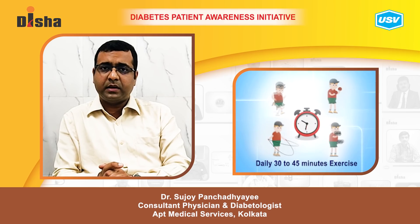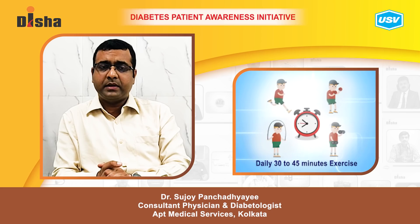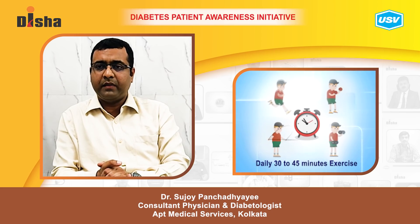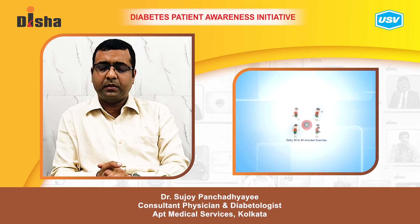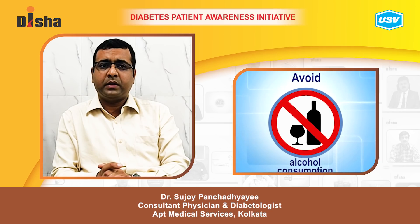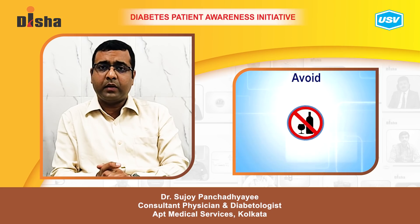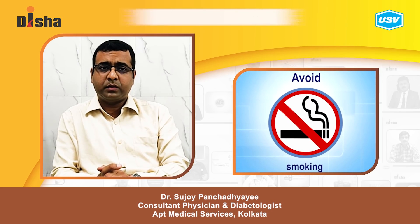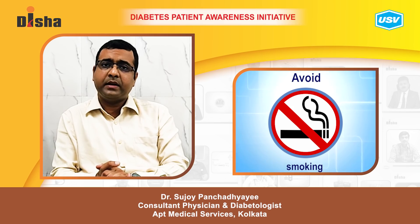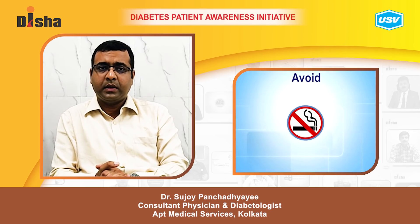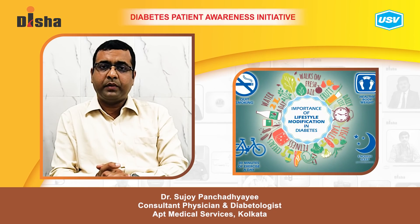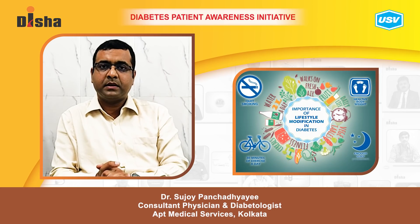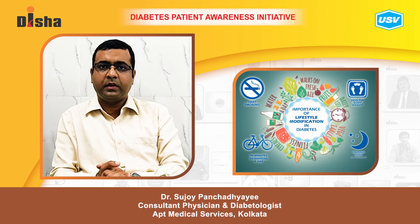Regular exercise is recommended — at least 150 minutes per week, averaging 30 minutes per day. Along with this, avoiding alcohol consumption, smoking, and a sedentary lifestyle is advised. Regular exercise and a healthy lifestyle can prevent complications as well as reduce the risk of developing diabetes.